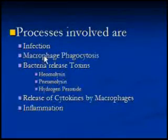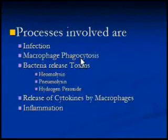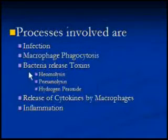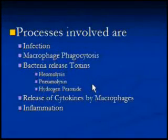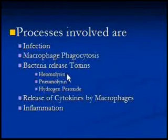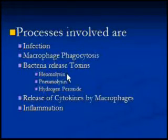In case macrophages cannot kill the whole population, then the rest of the bacteria start damaging the host cells — the alveolar cells — by releasing toxins.